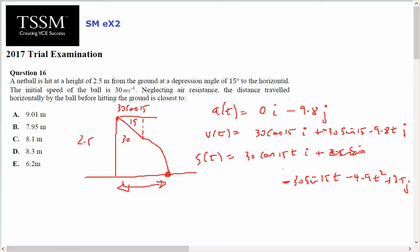This is for TSSM exam 2 number 16. A netball is hit at a height of 2.5 metres from the ground at a depression angle of 15 degrees to the horizontal.